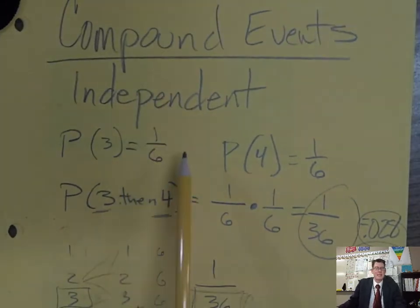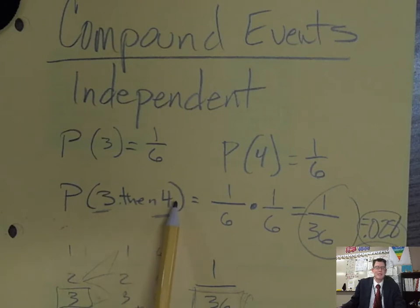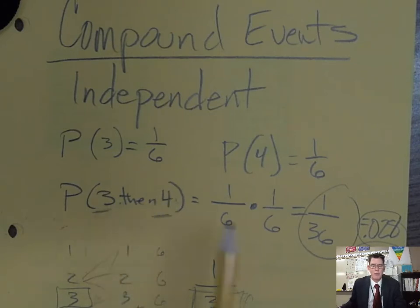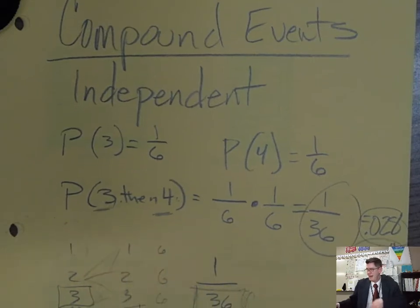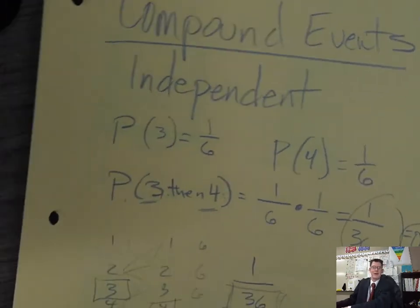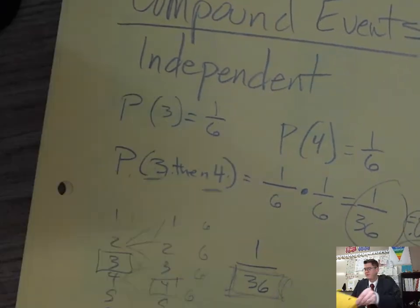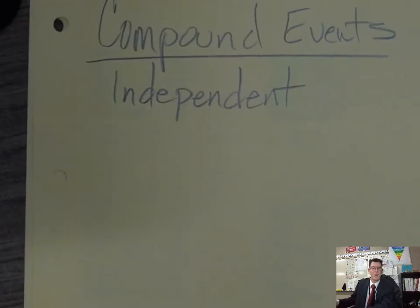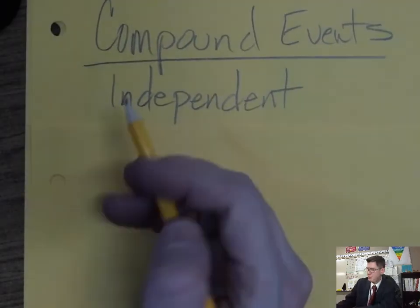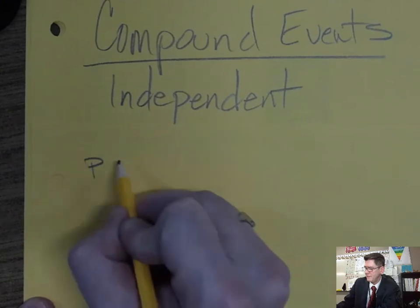These are called independent compound events. Independent means that one item does not depend on the other at all — they are completely independent of each other. Rolling a three and then rolling a four have nothing to do with each other. That's how we find the probability of compound events.